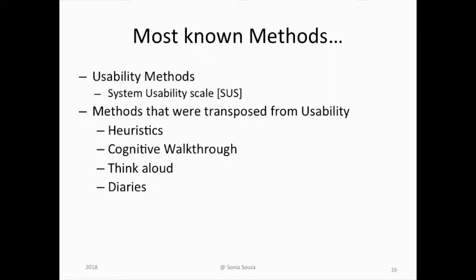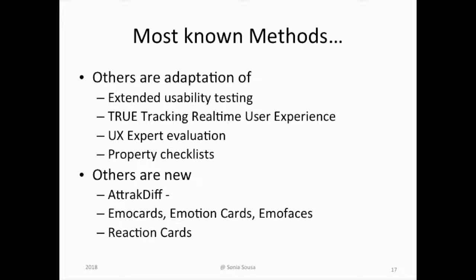The most known methods are related with usability. One of the methods used is called the System Usability Scale. We also use some sets of heuristics, cognitive walkthrough method, and think aloud diaries. There are other methods that are an adaptation of usability scales, addressed to provide more data on the user experience. Those are called extended usability tests or real-time user experience tracking. Other newer methods that measure usability and user experience include the AttrakDiff, emo cards, emo faces, or reaction cards.